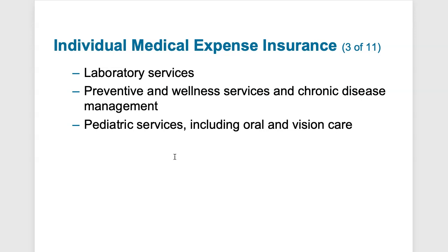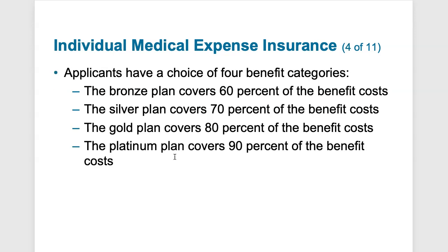Plans are offered in different benefit categories. As the categories go from bronze to gold to platinum, they become more expensive. A bronze plan is more bare-bones essential coverage — think of it as covering 60% of benefit costs. For every dollar you use in your benefit plan, 60% will be covered by the bronze plan, with out-of-pocket payments like deductibles, co-insurance, and co-payments making up the rest.